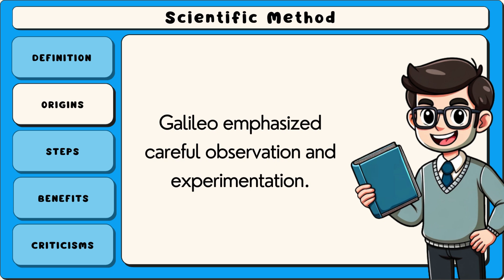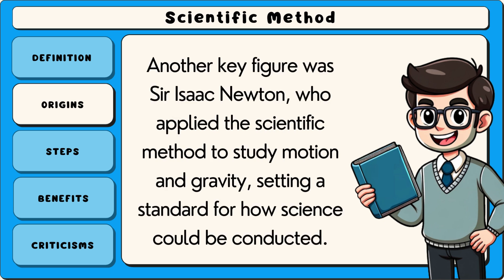Galileo emphasized careful observation and experimentation. Another key figure was Sir Isaac Newton, who applied the scientific method to study motion and gravity, setting a standard for how science could be conducted.